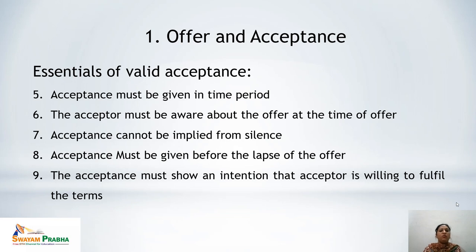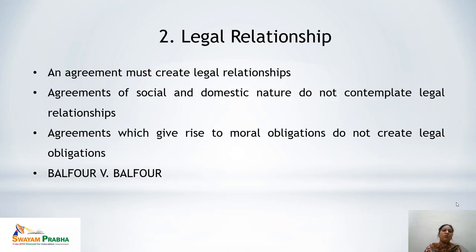By now, we have discussed the first component of Section 10 of the Indian Contract Act 1872 — that there should be a valid offer and valid acceptance for making a contract a valid contract. Now we move to the second point, which is legal relationship. There should be an intention to create a legal relationship in a contract. If the intention is not to create a legal relationship, it can never be a valid contract.